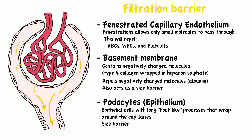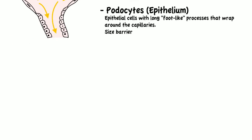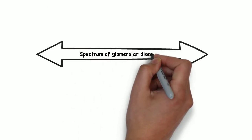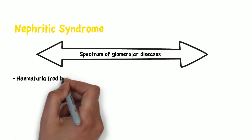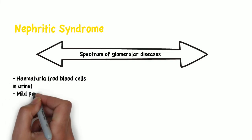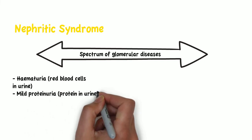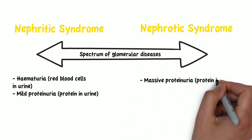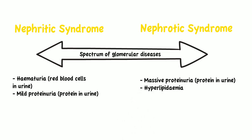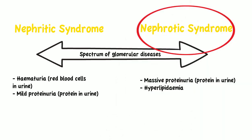On a fundamental level, glomerular diseases lead to the breakdown of the filtration barrier, leading to things in the urine that shouldn't be there — specifically red blood cells and proteins. On one end we have nephritic syndrome, where the patient will present with hematuria and mild proteinuria. On the other end we have nephrotic syndrome, where patients present with massive proteinuria and hyperlipidemia. We will only talk about nephrotic syndrome in this video.